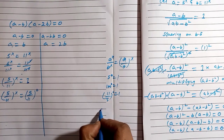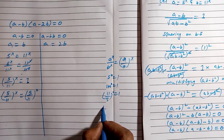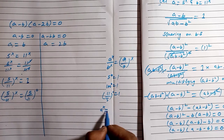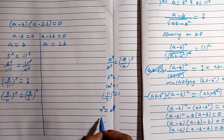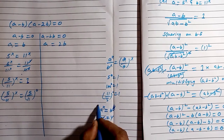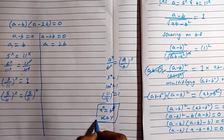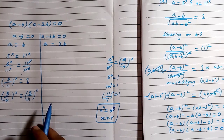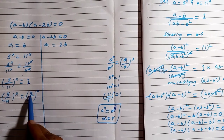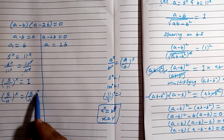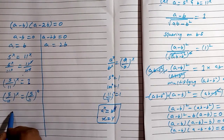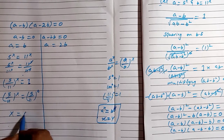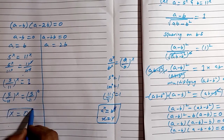Using the power rule — if a^x equals a^y then x equals y — we write (5/11)^x = (5/11)^0, so x equals 0 is our first solution.